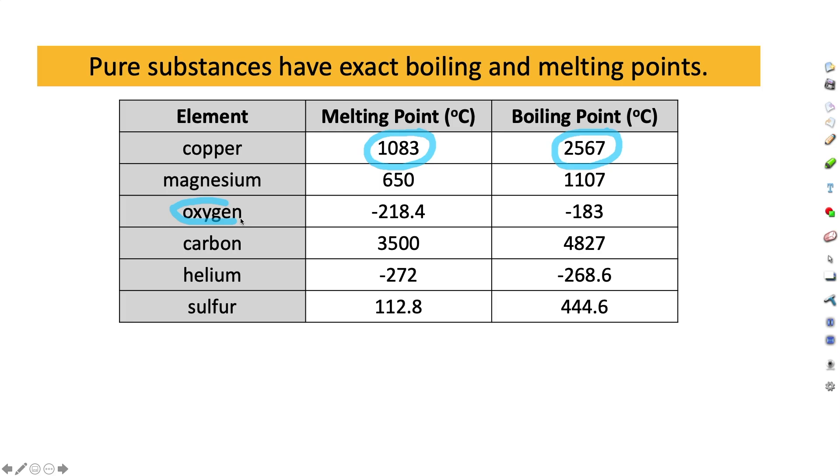Let's look at oxygen for example. We're used to seeing oxygen as a gas, but if you cooled that down it would condense at minus 183 degrees C, and if you cooled it down even further it would freeze at minus 218.4 degrees C and you'd have solid oxygen at that temperature.